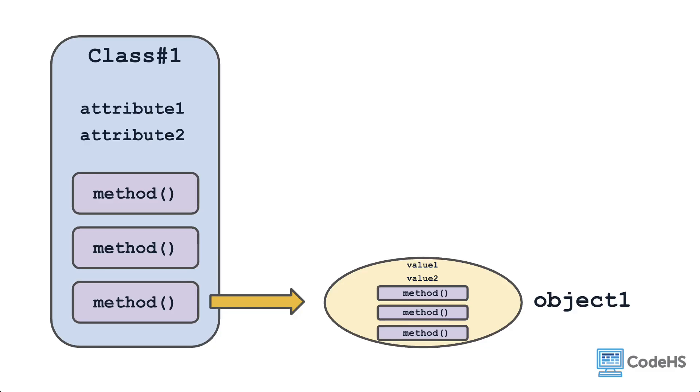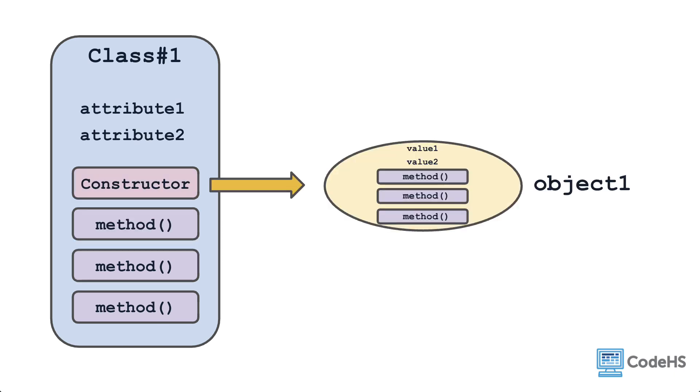Up to this point, you've known that a class can contain both attributes and methods, and that it can create objects with those similar elements. Now let's expand what you know about a class to include the constructor. Here you can see the constructor as part of the class, and more accurately, that it will be the element that actually creates the object.